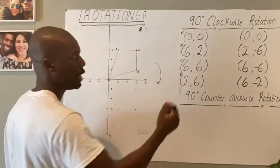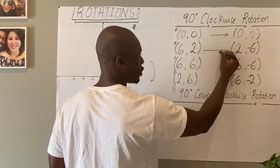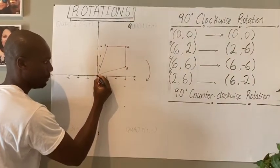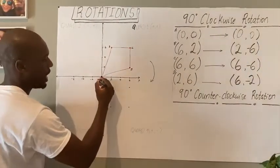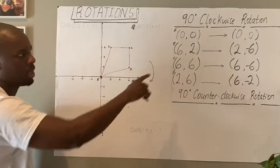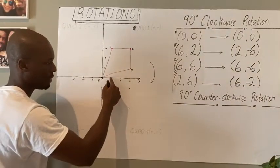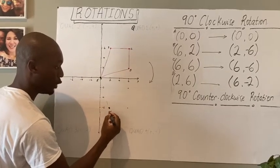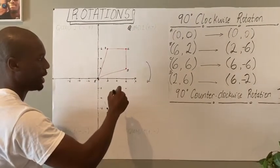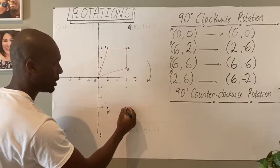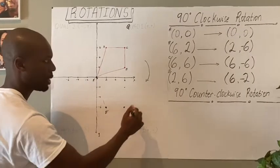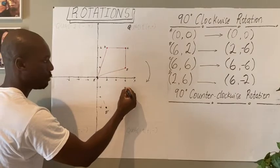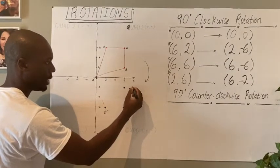So we're going to plot our new image right here, the coordinates of our new image. So I'm going to start with 0, 0. This is going to be 0, 0. I'm going to call it A prime. The second coordinate is 2 and negative 6. This is going to be my B prime, my new image. Third, 6 and negative 6. That's going to be my C prime. And then D, which is 6 and negative 2, falls right here, which would be my D prime.